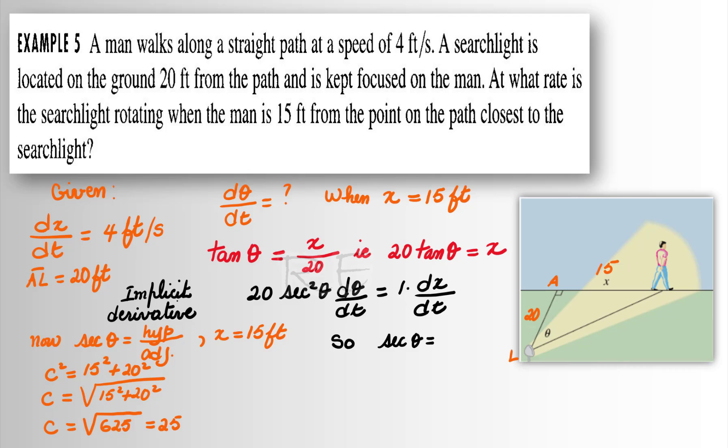Now, secant θ will be the hypotenuse 25 over the adjacent 20. When we reduce it, we get 5 over 4.